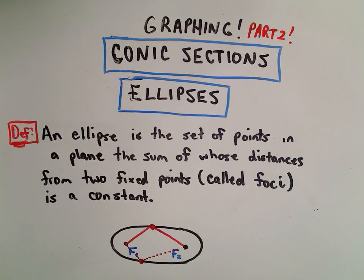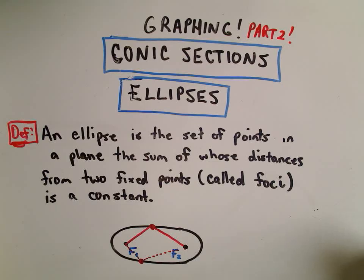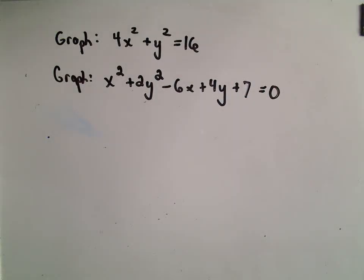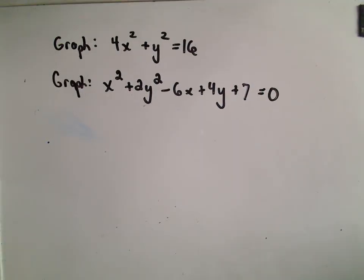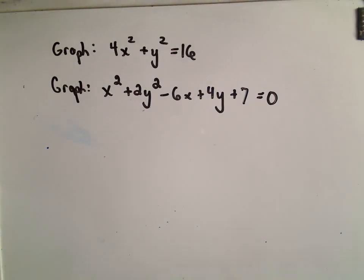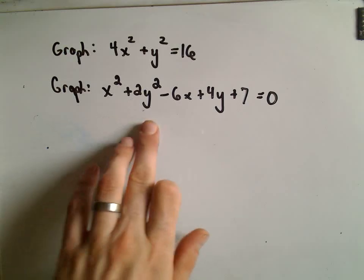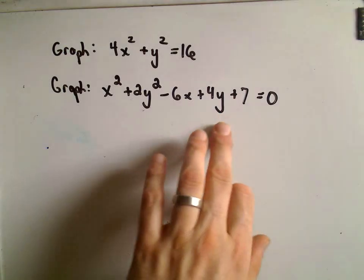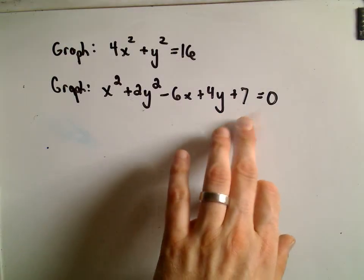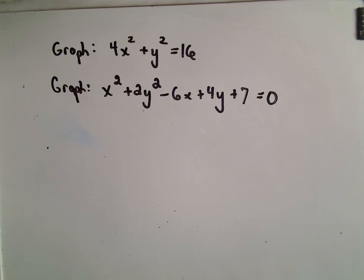In this video, this is going to be part two of my graphing conic sections — graphing ellipses in particular. We talked about the definition of an ellipse and gave the equation for it, some standard equations. In this case, I want to graph 4x squared plus y squared equals 16, and then the more tricky one: x squared plus 2y squared minus 6x plus 4y plus 7 equals 0.